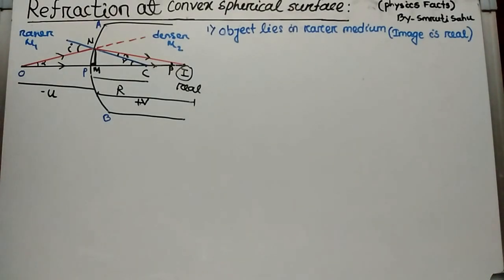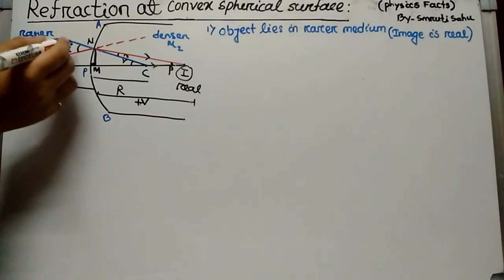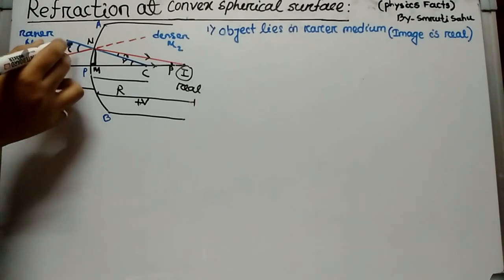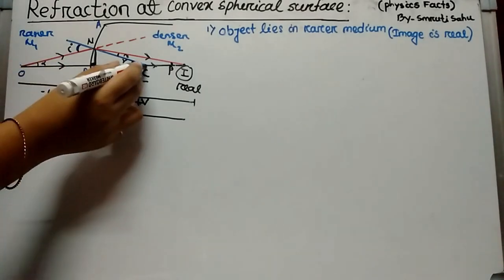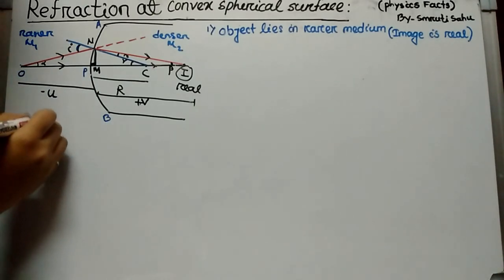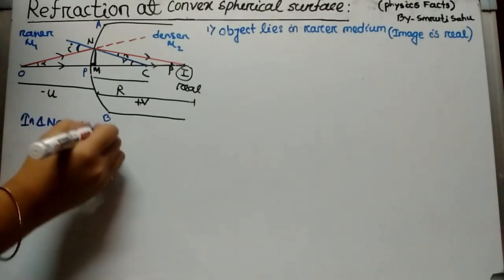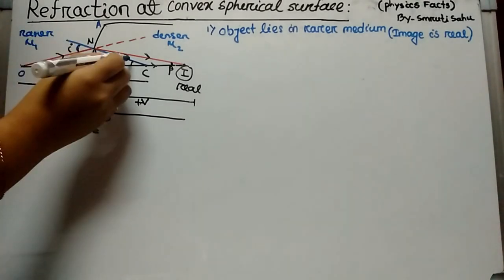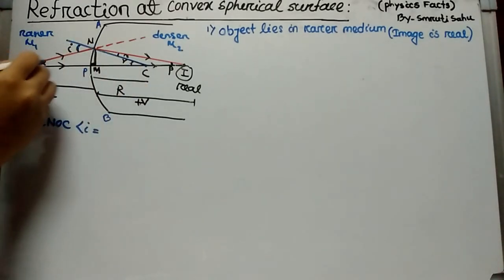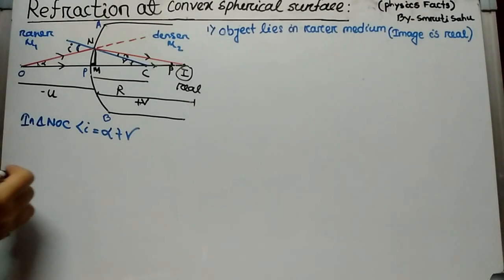Now we go to the derivation. We calculate the angle of incidence and angle of refraction. To calculate angle i, we look at triangle NOC. In triangle NOC, angle i equals alpha plus gamma.